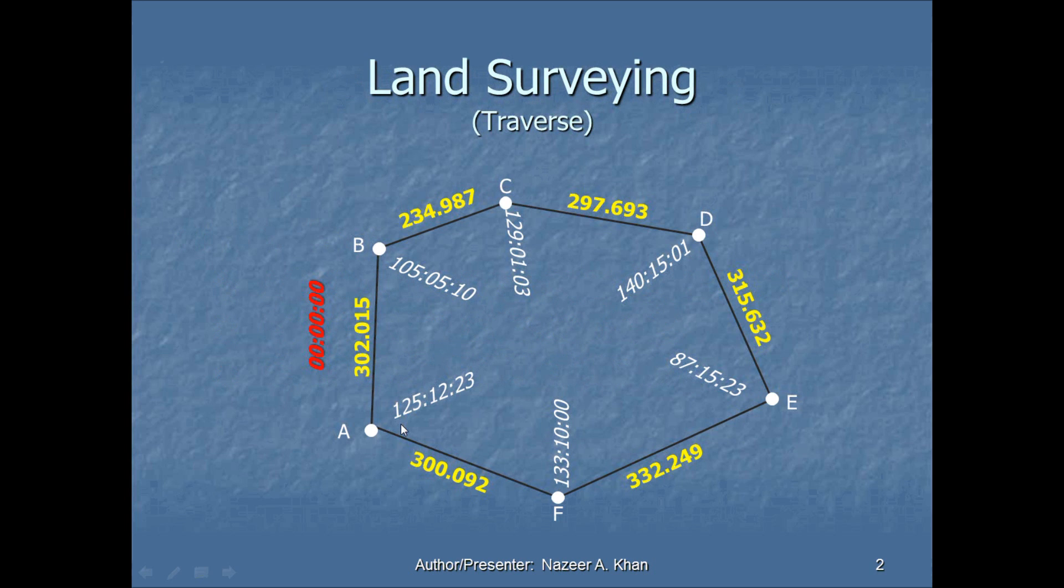Let's look at the information that would be given for a typical traverse. We have the interior angles that are given in degrees, minutes and seconds in white. We have each length of the line segment given in yellow and we have one bearing that's given. So this is typical information that you would have with a traverse. In this example or demonstration, we won't be using the actual length of each leg of the traverse.